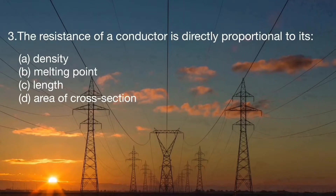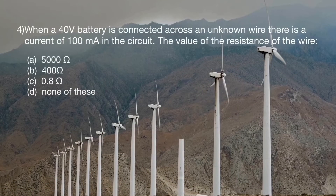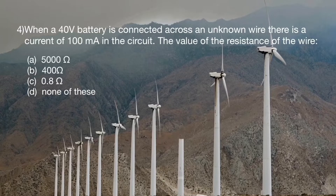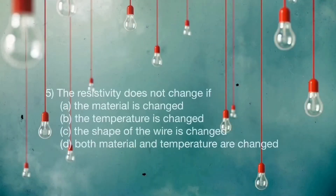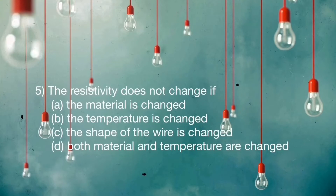Question number four: when a 40 volt battery is connected across an unknown wire, there is a current of 100 mA in the circuit. The value of resistance of the wire is — A: 500 ohm, B: 400 ohm, C: 0.8 ohm, D: none of these.